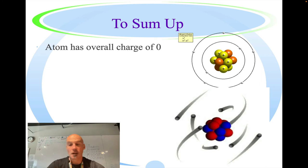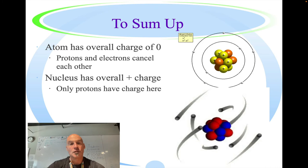To sum up, the atom has an overall charge of zero. A neutral atom has an overall charge of zero. The protons and electrons cancel each other out. The nucleus has an overall positive charge, and only the protons have the charges here.